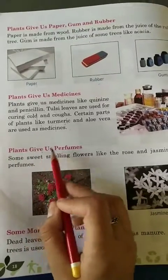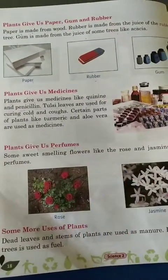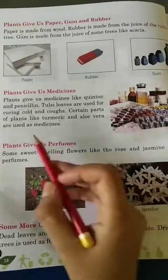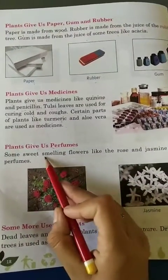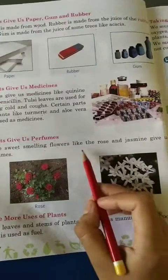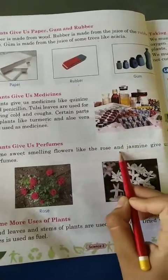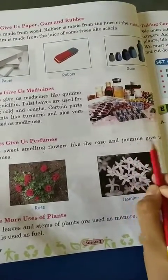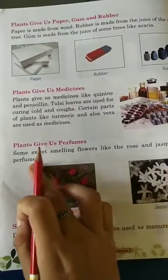Plants give us perfumes. Some sweet-smelling flowers — 'khushbuwali' — like the rose — 'gulab' — and jasmine — 'chameli' — give us perfumes.